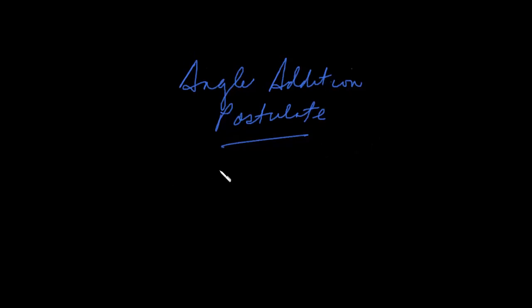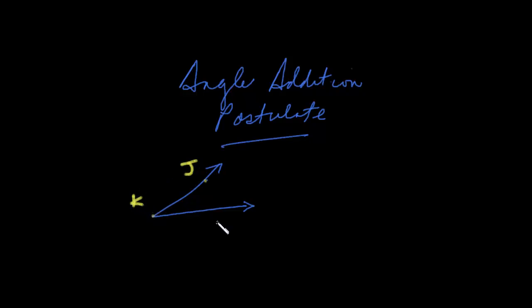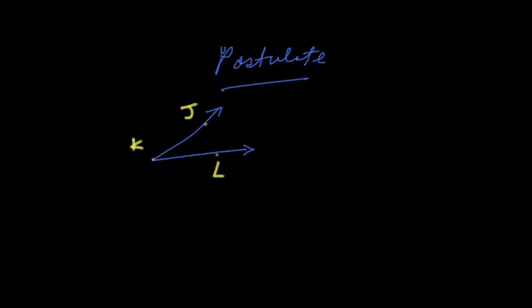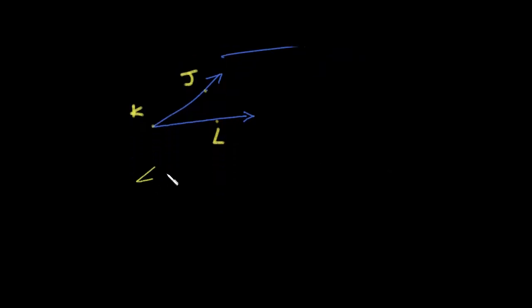The angle addition postulate, as you would suspect, is simply that if you have an angle — let's draw an angle here. We'll call this angle's points J, K, and L, so we have angle JKL.